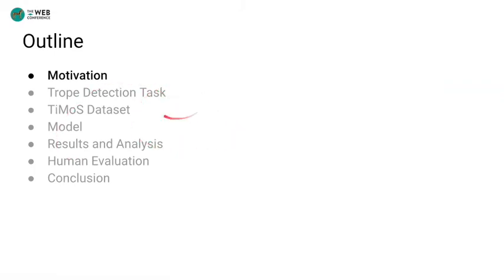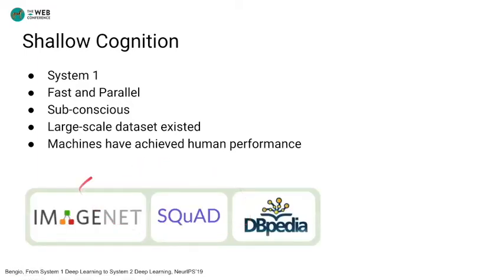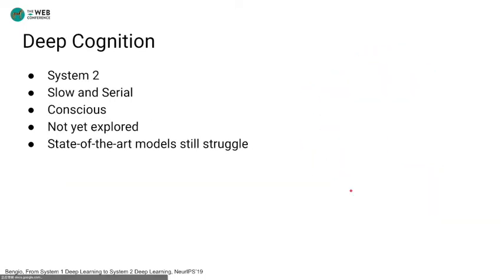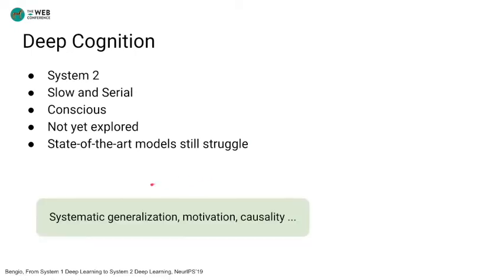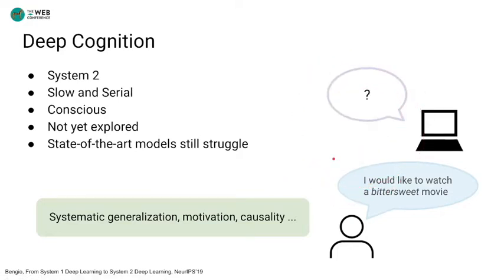So let's start with motivation. In the past decade, the progress of deep learning has hugely improved many shallow cognition systems and achieved human-level performance on various benchmarks such as image classification, and enabled various applications like image search. However, deep cognition skills like systematic generalization, motivation, and causality are still challenging, even for modern learning systems. For example, an educated human could understand what bittersweet is, but a movie recommendation system could hardly understand the concept and provide a desired movie to the user.